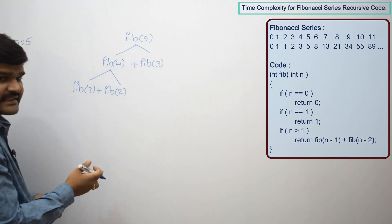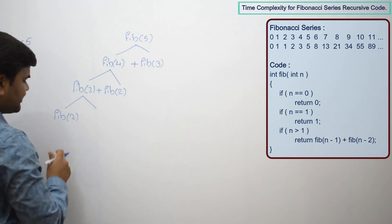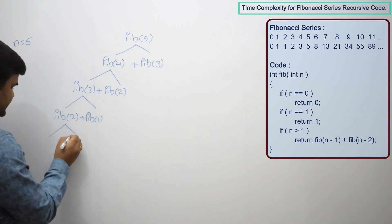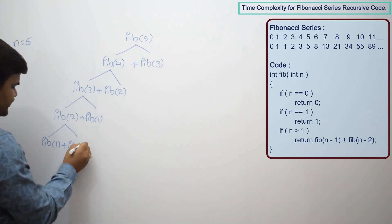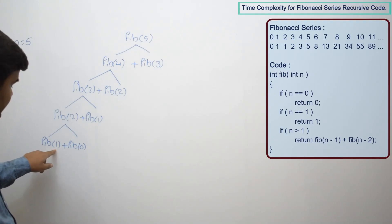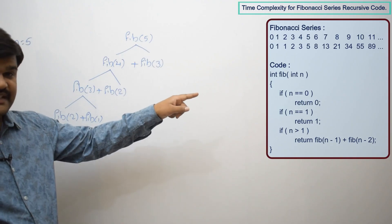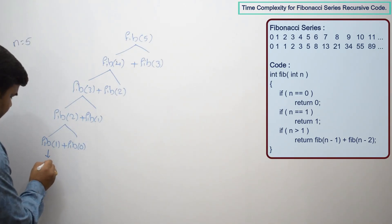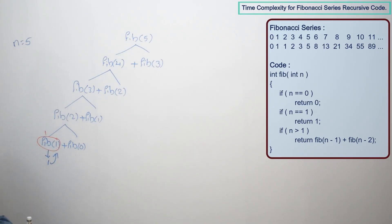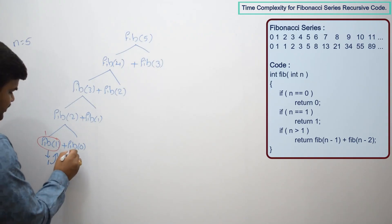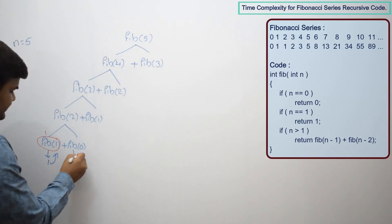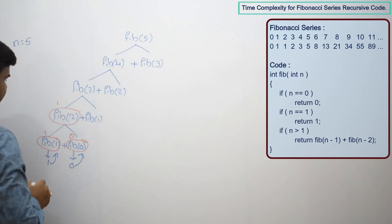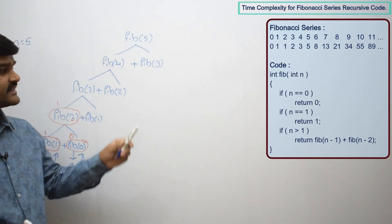The 3rd Fibonacci number is found by calling fib(2) plus fib(1). The 2nd Fibonacci number calls fib(1) plus fib(0). For fib(1), n equals 1 so the second if-statement is true, returning 1. For fib(0), the first if-statement is true, returning 0. So 1 plus 0 = 1, meaning the 2nd Fibonacci number is 1. Similarly, fib(1) returns 1, so 3rd Fibonacci number is 1 plus 1 = 2.